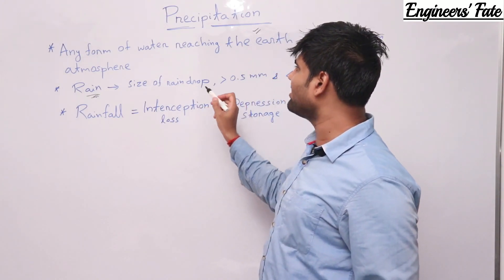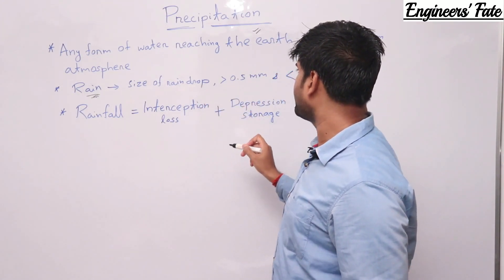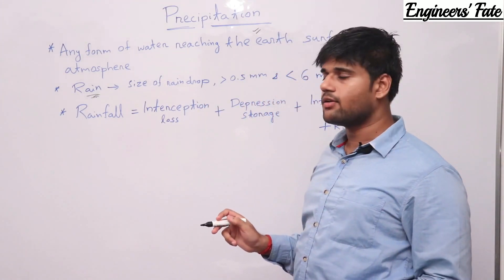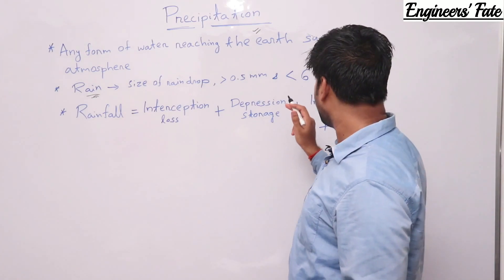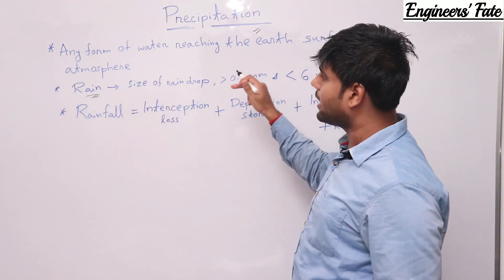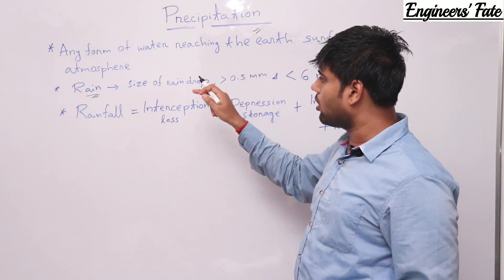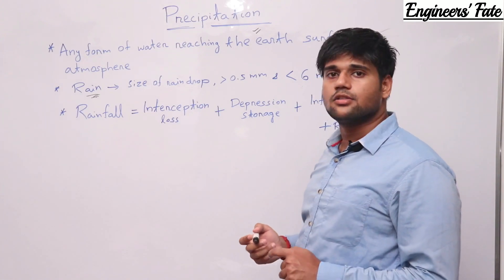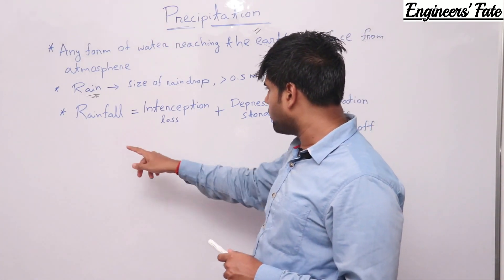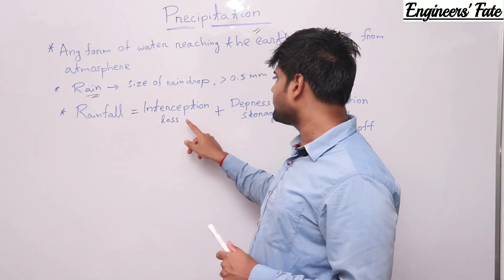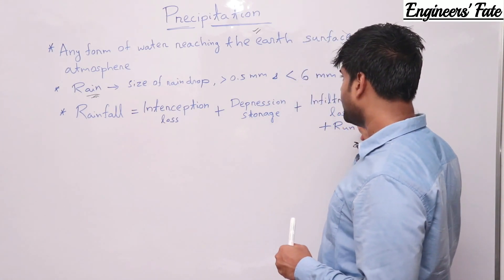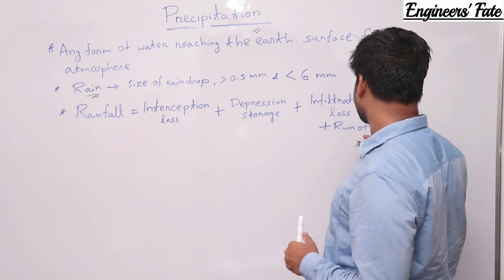The size of a raindrop is greater than 0.5 mm and less than 6 mm — that will be called rain. Rainfall equals interception loss plus depression storage plus infiltration loss plus runoff.